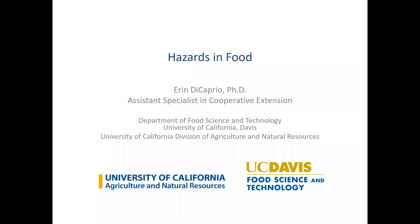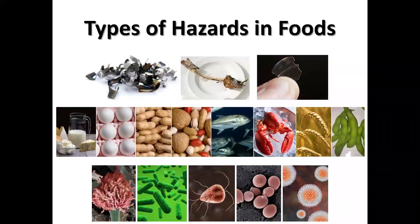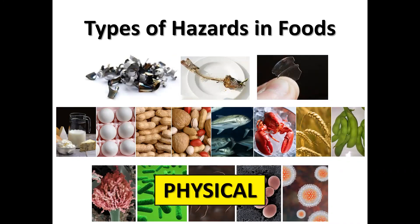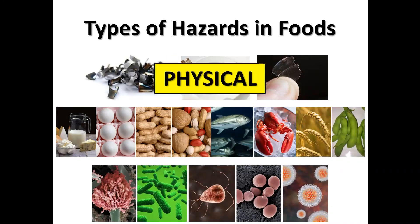Let's talk about hazards in food. There are three basic types of hazards present in food. The first is physical hazards. This includes things such as metal shavings, bones, glass, and wood that might end up in a food product and cause damage to the teeth, mouth, or digestive tract.